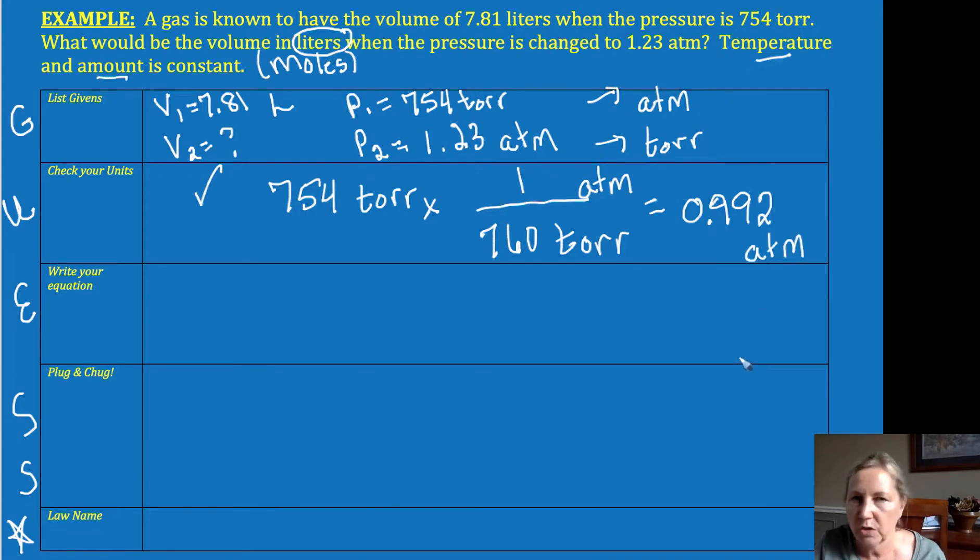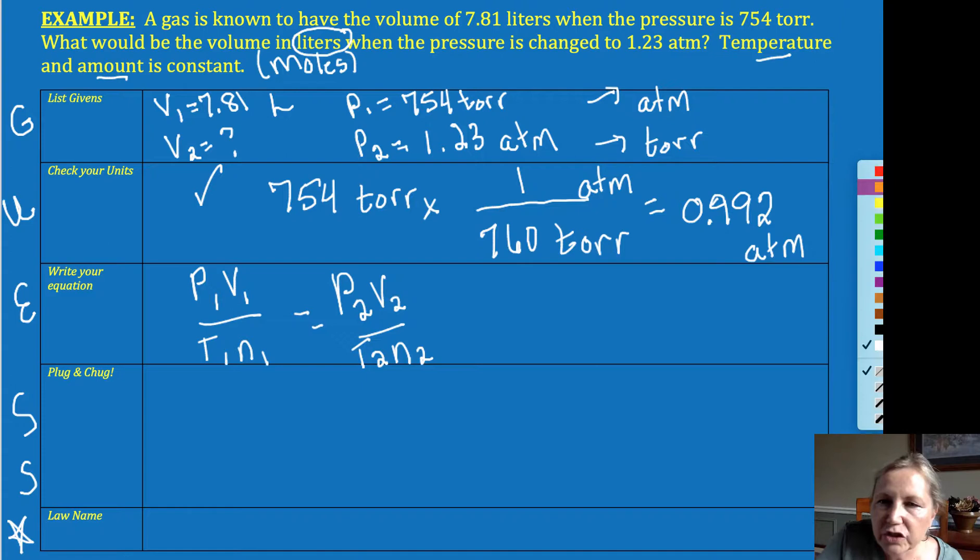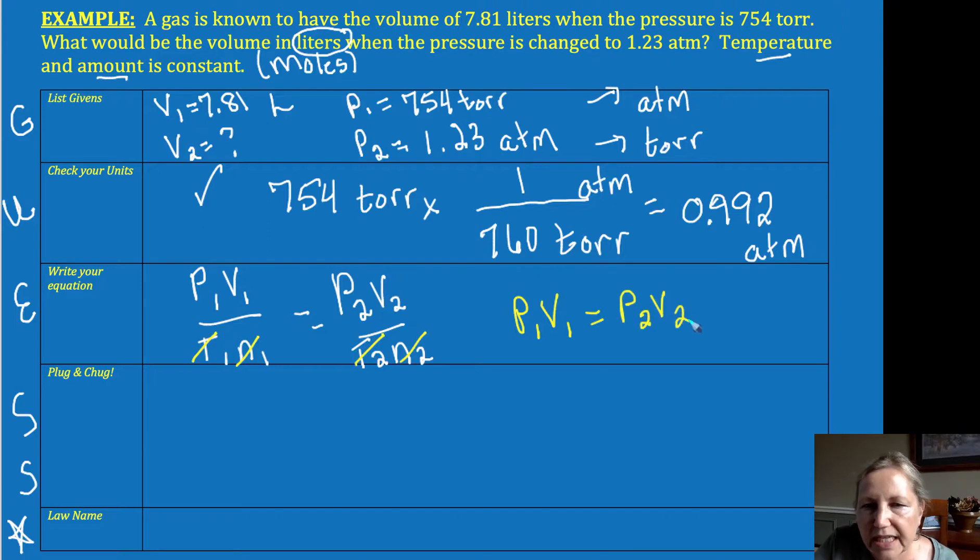Now since I've checked my units, I don't have to worry about writing them down when I do my math. So we've got P1V1 over T1N1 is equal to P2V2 over T2N2. Now all I have to do in this equation is I cross off what doesn't change. Temperature doesn't change—it would cancel on both sides of the equation. So I end up with P1V1 is equal to P2V2, and Boyle is very pretty, so I know that is Boyle's law.